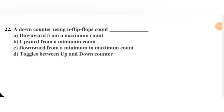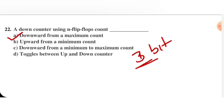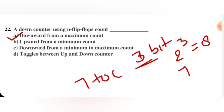Next question: a down counter using n flip-flops counts — downward from a maximum count, upward from a minimum count, downward from minimum to maximum, or toggles between up and down. Option A is correct: it counts downward from a maximum count. For a 3-bit counter with 3 flip-flops, the maximum value is 2³ − 1 equals 7, so counting starts at 7 and goes down to 0. The range is 2^n − 1 to 0, opposite of up counting.